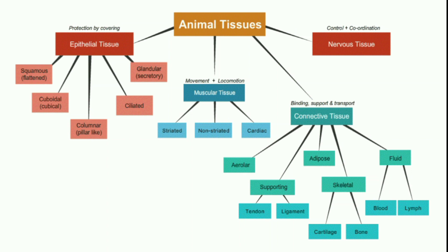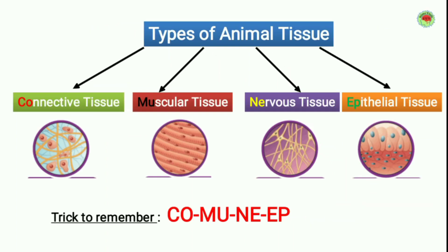Nervous tissue is for control and coordination. That covers all the types of animal tissue. Now let's see the trick to remember them.